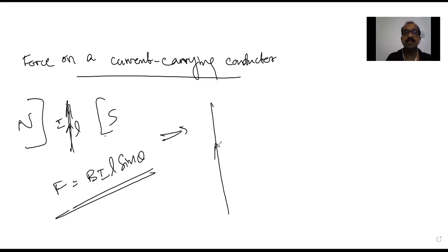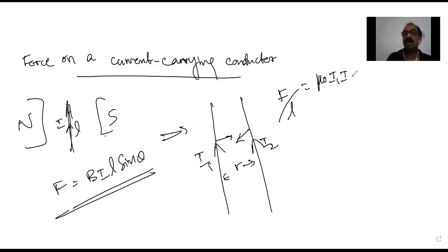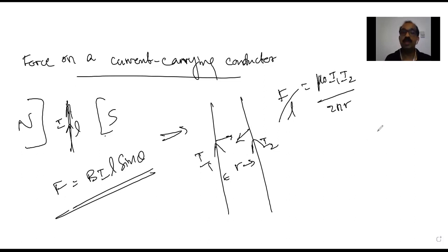This leads to another concept: whenever two conductors carry current and are separated by distance r, there is a force between them. If currents are in the same direction, there is attraction; if opposite, there is repulsion. The force per unit length is given by F/L = μ₀I₁I₂ / 2πr.